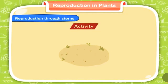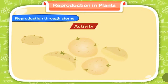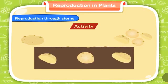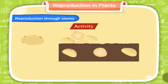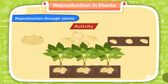Activity: Take a big potato and cut it into several parts such that each part has a bud. Plant these potato parts in moist soil. These potato parts will grow into new potato plants.